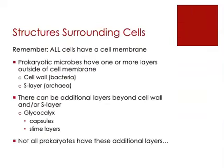Remember, all cells — prokaryotic and eukaryotic — have a cell membrane. They have other things in common as well, from our previous lectures. All cells have a membrane, cytoplasm, DNA as their genetic material, and ribosomes for protein production.